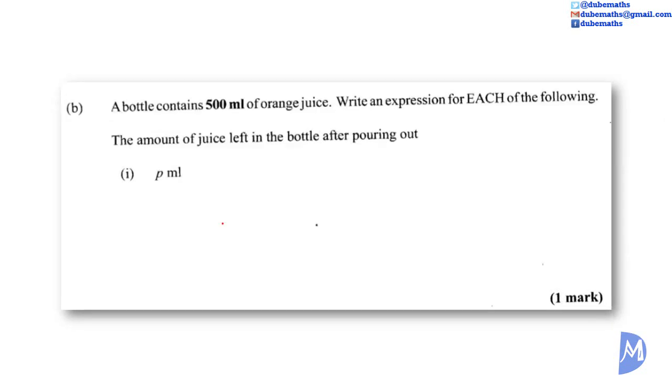2B. A bottle contains 500 ml of orange juice. Write an expression for each of the following. The amount of juice left in the bottle after pouring out P ml. The bottle started with 500 ml. We poured out P ml, so we have in the bottle 500 minus P ml. So the expression is 500 minus P ml.